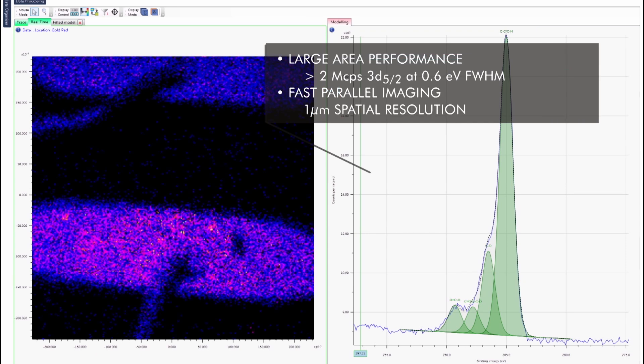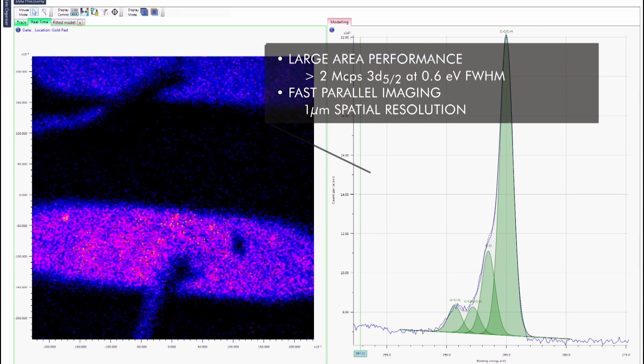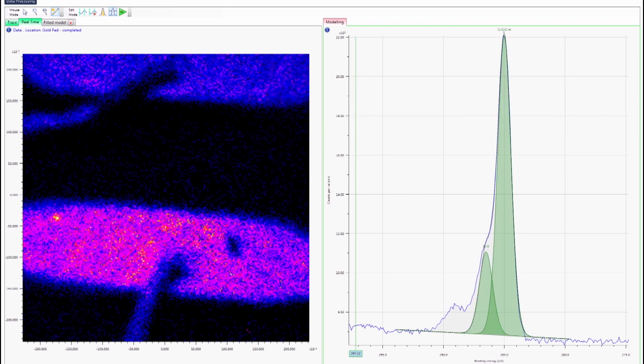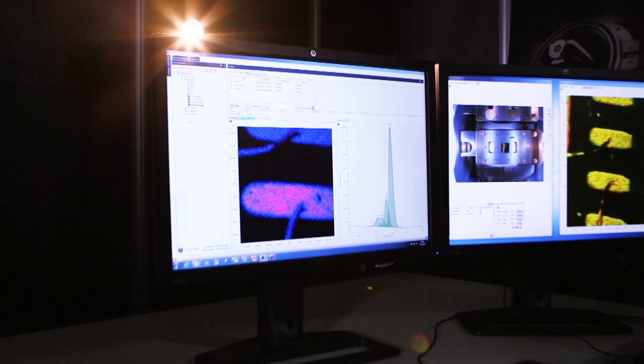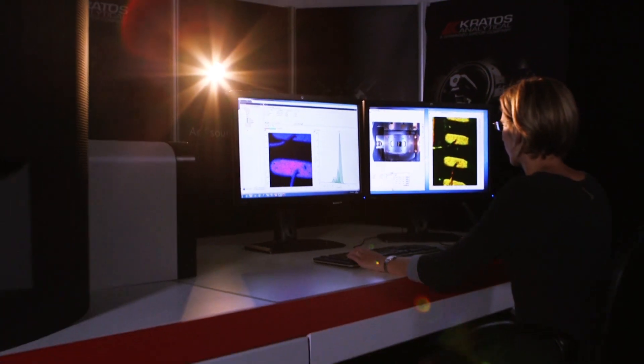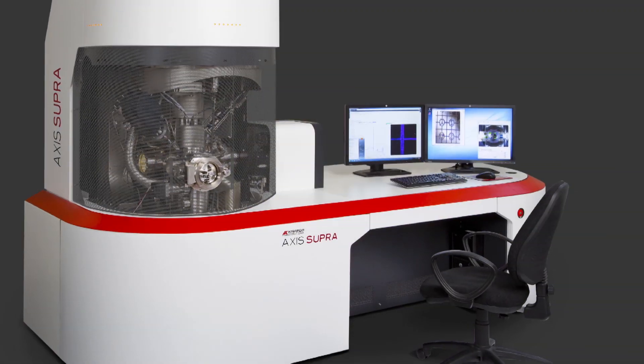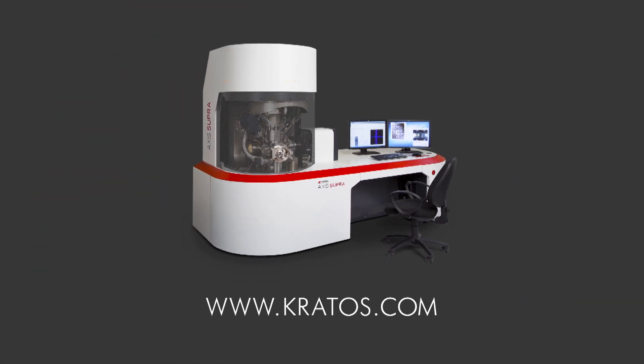The Axis Supra, controlled through ESCAPE software, is designed for ease of use with unrivaled levels of automation. However, this doesn't compromise performance. The Axis Supra meets the analysis needs of the most demanding surface analysis applications. The Axis Supra is redefining XPS. Visit Kratos.com to find out more.